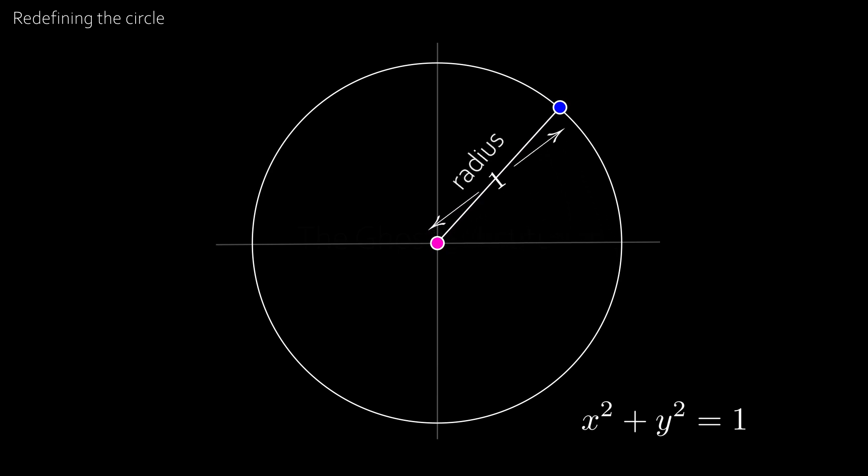then this is done parametrically with a little help from our old friend, trigonometry, giving us x equal to cosine theta and y equal to sine theta.